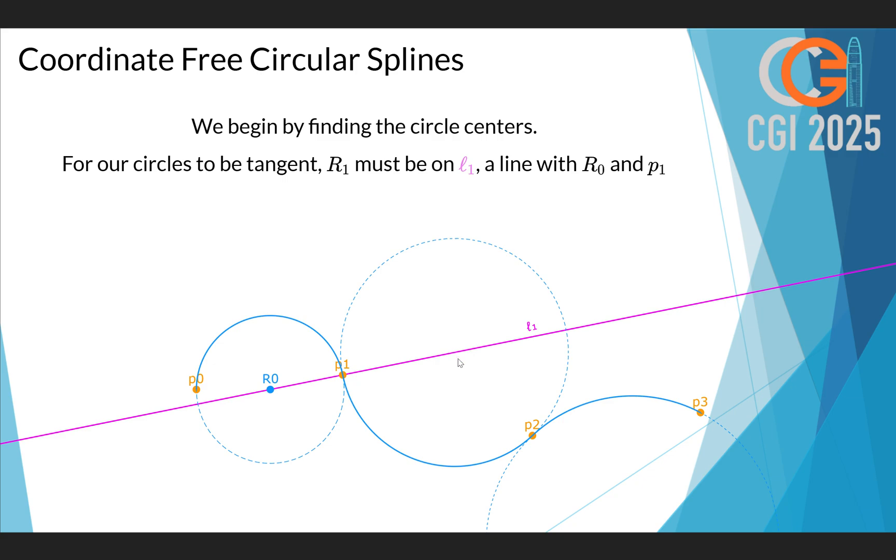And we know something else about the center that we are looking for. It needs to be equally far from P1 and P2. It needs to be the radius of the circle away, obviously. So all of the points that are equally far from P1 and P2 are points on another line. Let's call that line L2. And given these two lines, we could approach the problem this way.